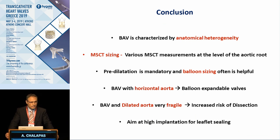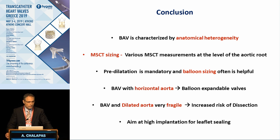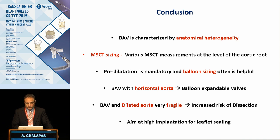In conclusion, the bicuspid valve is not a rare situation in TAVR. It is characterized by morphological and anatomical heterogeneity. CT is the gold standard to evaluate the anatomy at different levels of the aortic root. Balloon sizing is an important step during the annulus sizing procedure. When there is a horizontal aorta, self-expandable valves must be used with caution. When there is a dilated aorta — which is more fragile with higher risk of dissection — balloon-expandable valves must be used with caution, especially when oversizing. We must always aim for high implantation for better leaflet sealing.